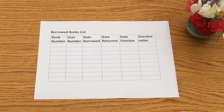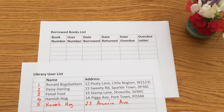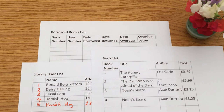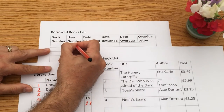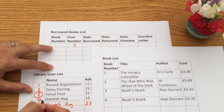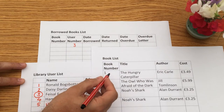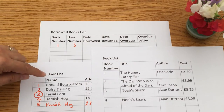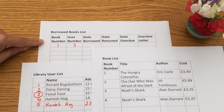This is the clever bit. Say we have Faisal Foot who wants to borrow a book — Faisal wants to borrow The Hungry Caterpillar. Faisal is user number three, so we put user number three — you can see that links to his record. And the book he wants to borrow is The Hungry Caterpillar, which is book number one. So now we've linked to the two other tables in our new Borrowed Books List table.